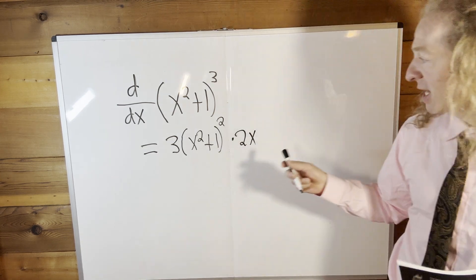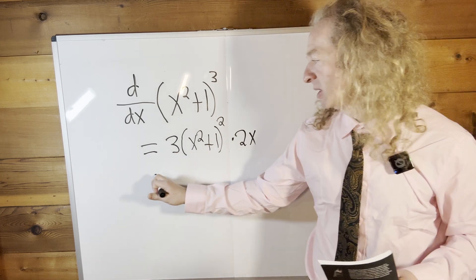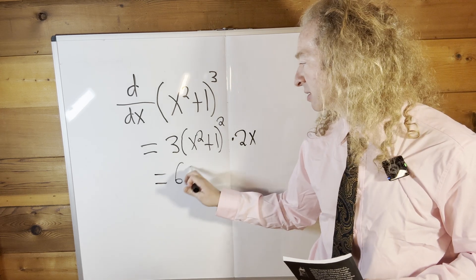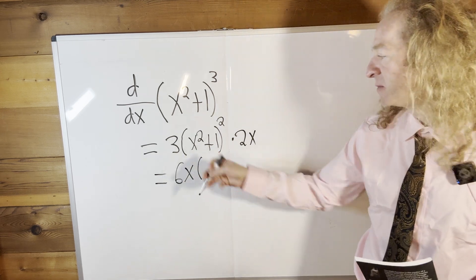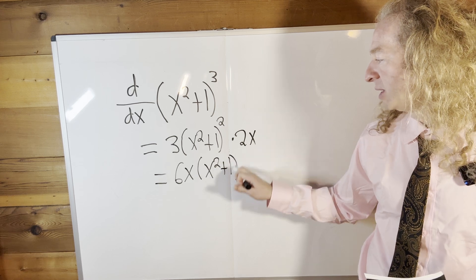So now the last thing to do is basically just multiply the 3 and the 2x. This will be equal to 3 times 2x is 6x, so this is 6x times this piece here: x squared plus 1 quantity squared.